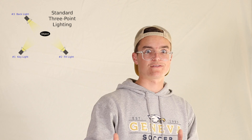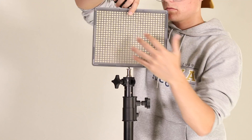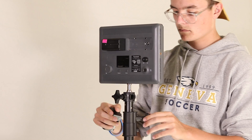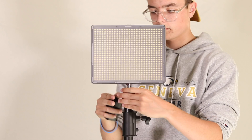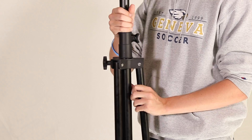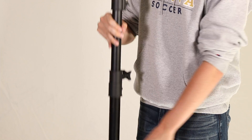Now let's talk about setting up that three-point lighting setup. This is a lighting stand — you screw the light onto the little silver mount at the top, and tighten everything with these knobs. Everything can extend and go back in. They're really simple and easy to use.